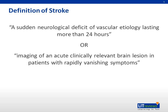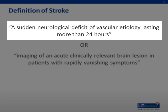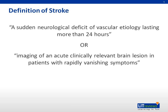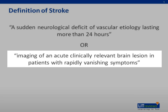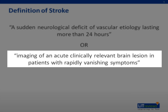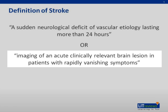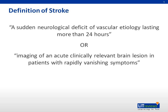Stroke is classically defined as a sudden neurological deficit of vascular etiology lasting more than 24 hours. However, with the advent of modern imaging studies, there are some modifications to the definition. Patients with rapidly vanishing symptoms and imaging of an acute clinically relevant brain lesion are considered to have suffered from a stroke. A transient ischemic attack, or TIA, is a transient episode of neurological dysfunction caused by focal brain, spinal cord, or retinal ischemia without acute infarction.